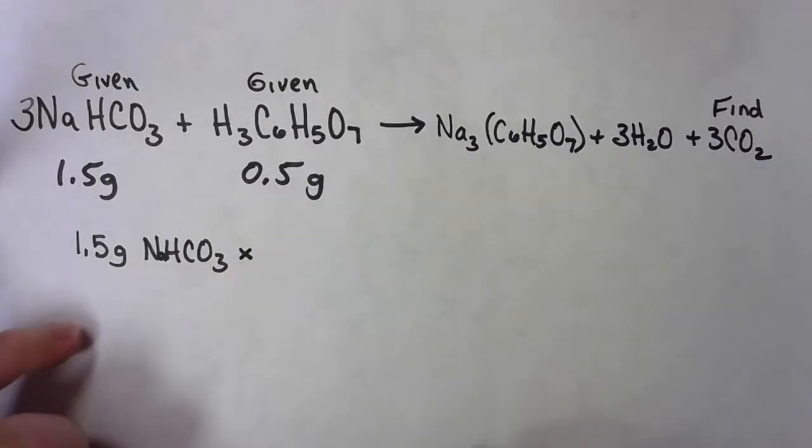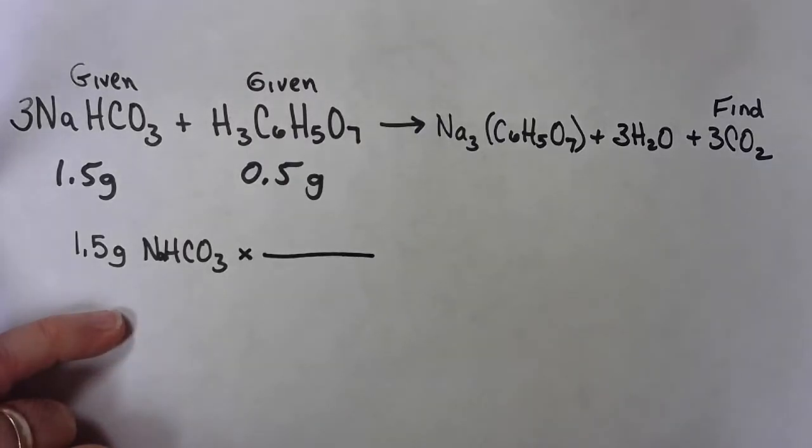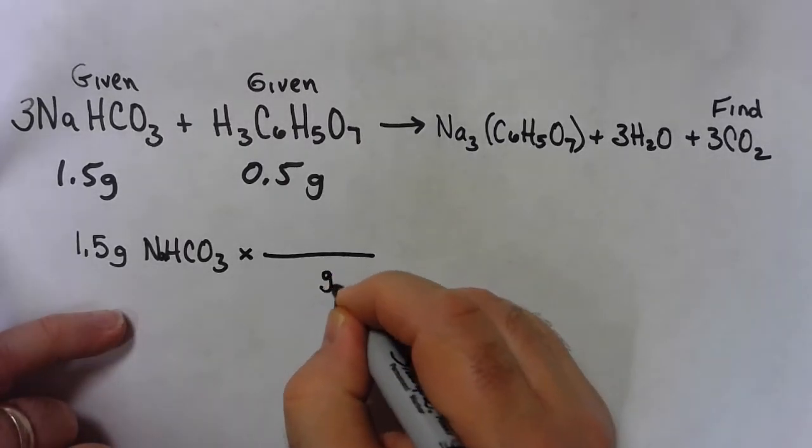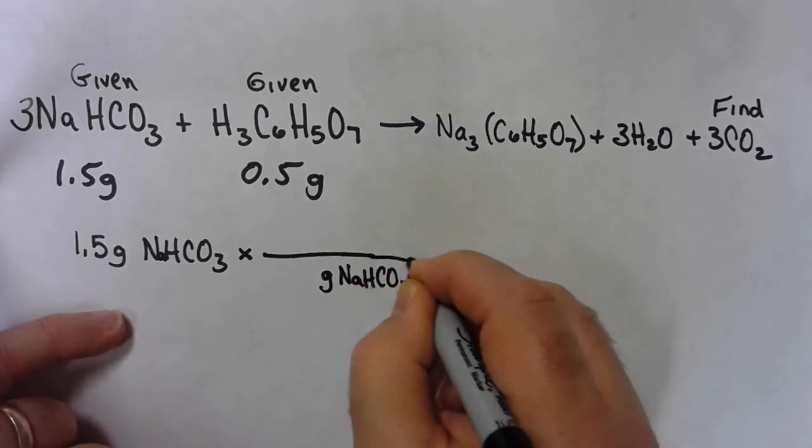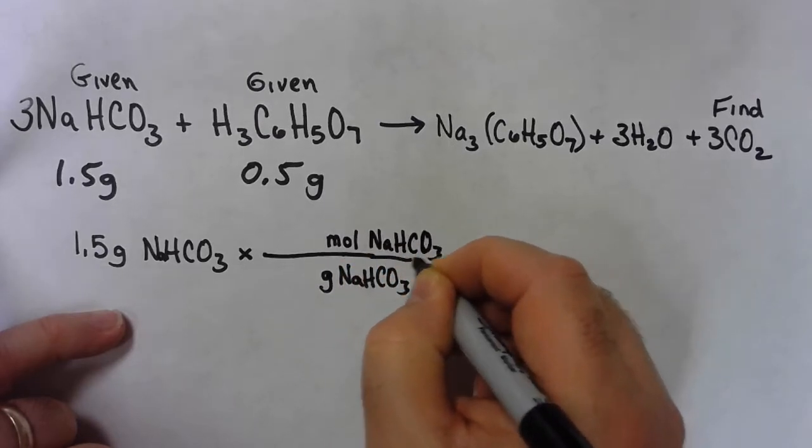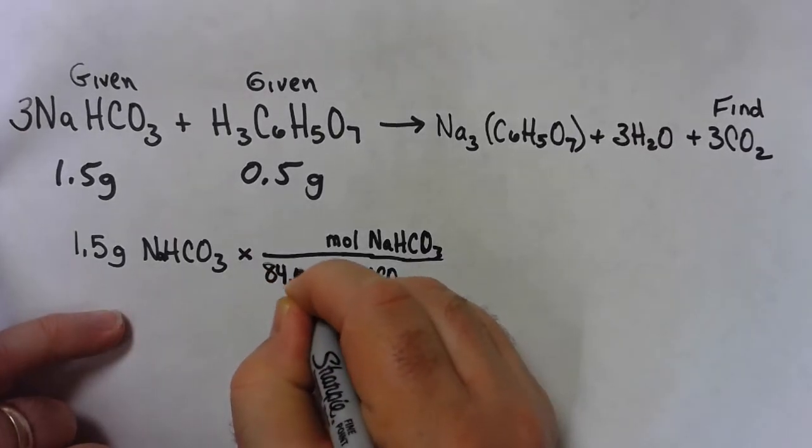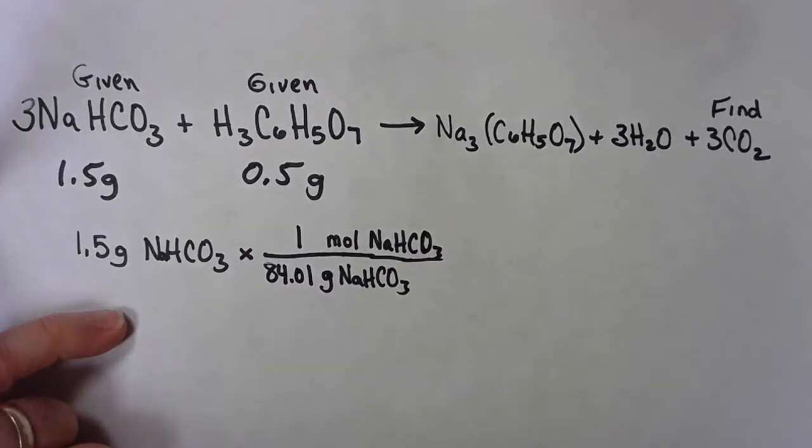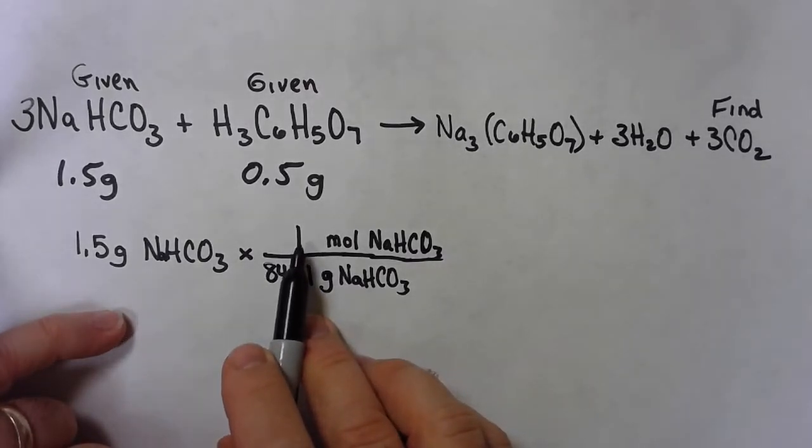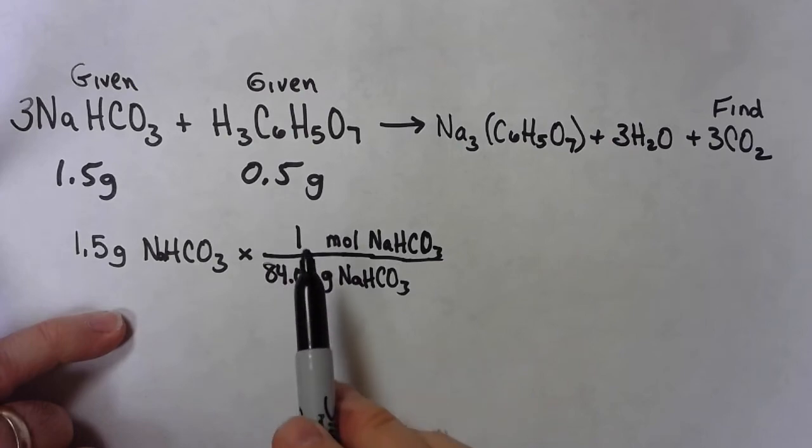Hopefully you know that if I want moles, I've got grams and I want moles, I'm going to have to multiply that by some fraction that puts grams of baking soda in the bottom and moles of baking soda on top. And I need some number that relates grams and moles of sodium bicarbonate, and that number is the molar mass. The molar mass of the sodium bicarbonate is 84.01 grams per one mole. This number is always one.